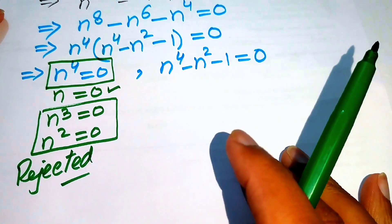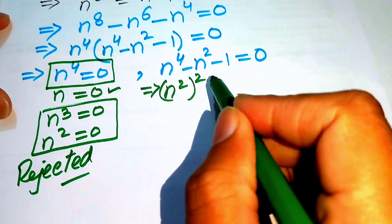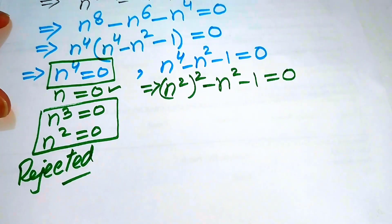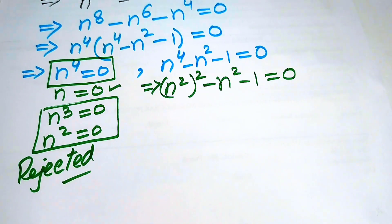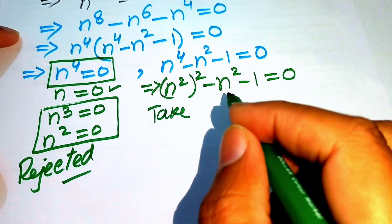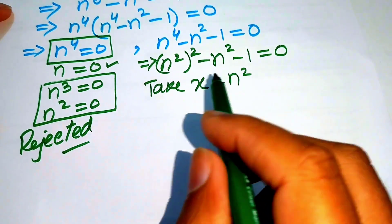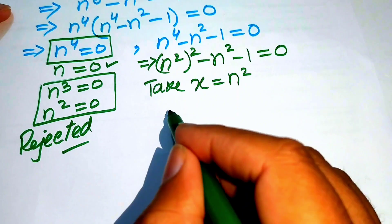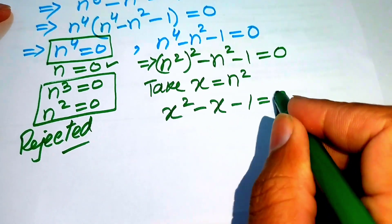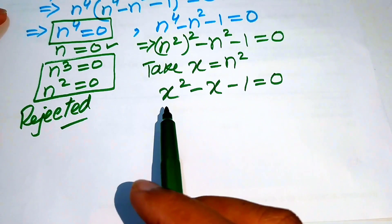We proceed with Case 2. We rewrite the equation as (n squared) squared minus n squared minus 1 equals 0. To convert this into standard quadratic form, we substitute x equals n squared, giving us x squared minus x minus 1 equals 0.